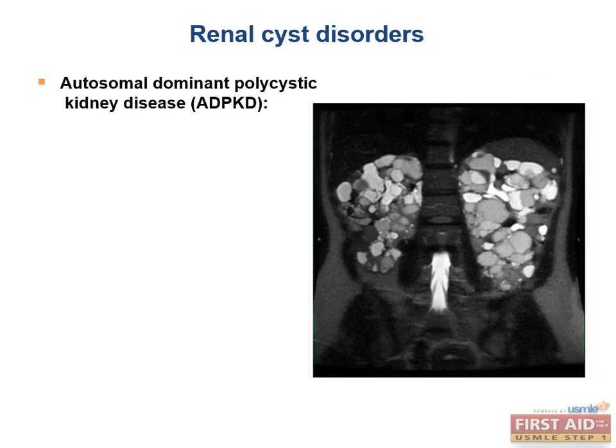The final topic in renal pathology is renal cysts, where instead of a normal kidney with a cortex and a medulla, a cystic kidney can be obliterated by fluid-filled cysts. The first cause is autosomal dominant polycystic kidney disease, which causes massively enlarged kidneys that ultimately destroy the kidney parenchyma.